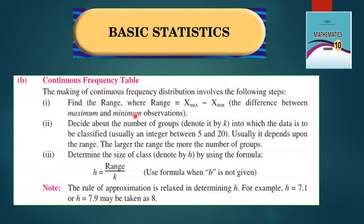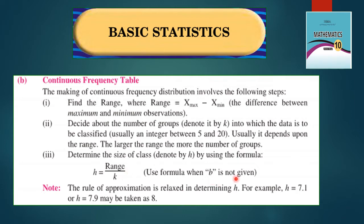The second type is continuous frequency distribution. The steps involved are: first, find the range — range is maximum value minus minimum value. Second, decide about the number of groups, denoted by k, into which data is classified, usually an integer between 5 and 10. Third, determine the size of class, denoted by h, where h equals range divided by k — use this formula when h is not given.